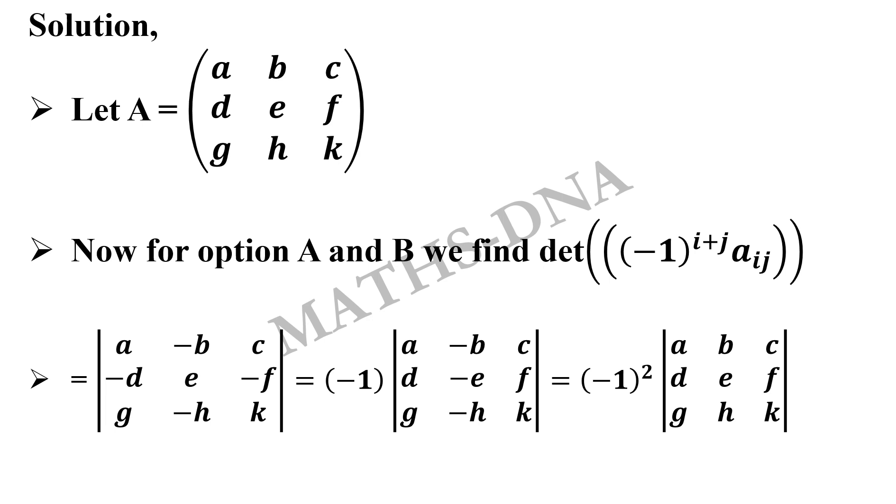Then taking minus sign common from the middle row we get the following matrix A, minus B, C, D, minus E, F and G, minus H, K. Again taking minus 1 common from the second column we get minus 1 whole square into determinant of A, B, C, D, E, F and G, H, K. Just go through the properties of determinant.